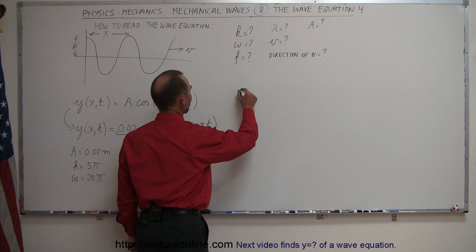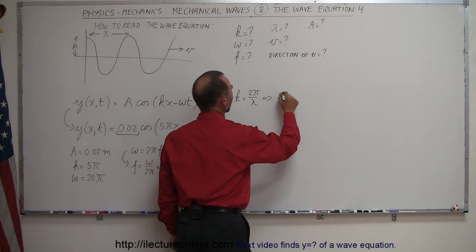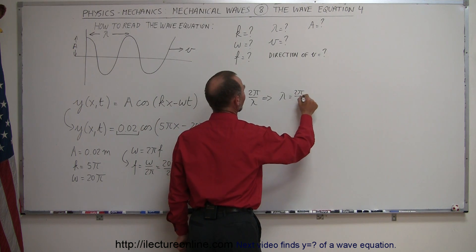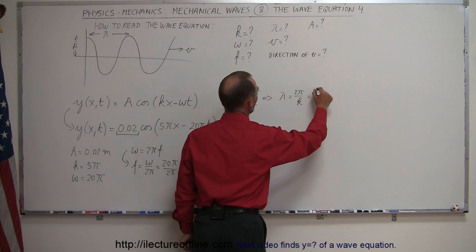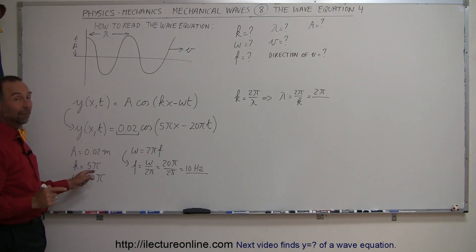And we know that k is equal to 2 pi divided by lambda, which then implies that lambda is equal to 2 pi divided by k. 2 pi divided by what k is equal to, and we determine k is equal to 5 pi.